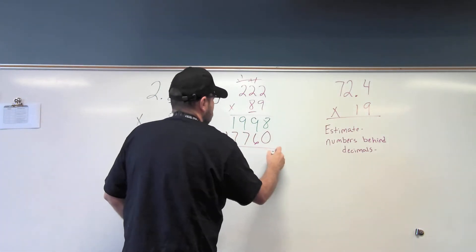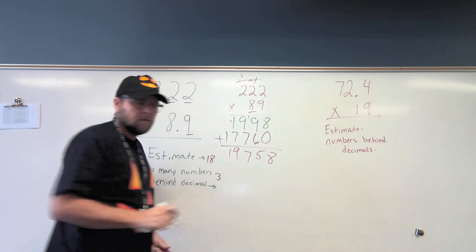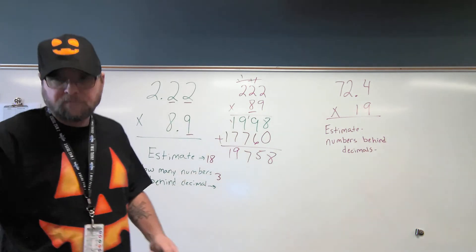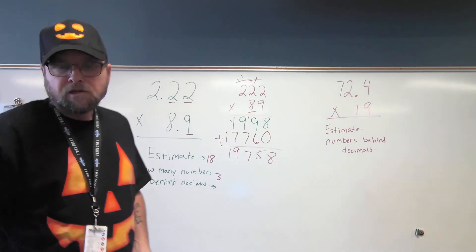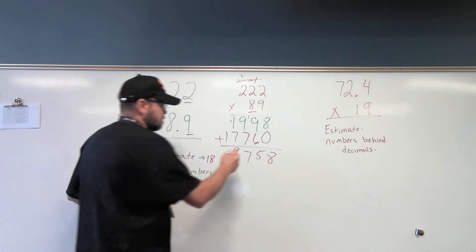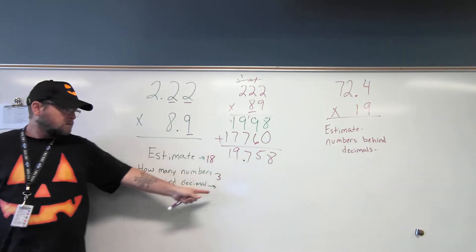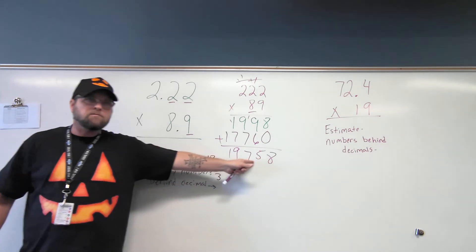Then I add these two products together. 1, 9, 7, 5, 8. Jalen, where does my decimal point go? So, in between the 9 and the 7. Now, he can tell that two ways. My estimate was 18. And there are three numbers have to be behind my decimal point.